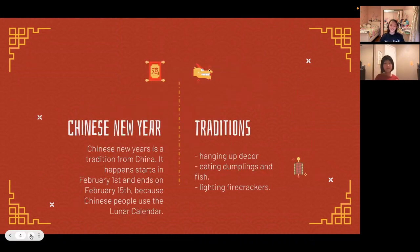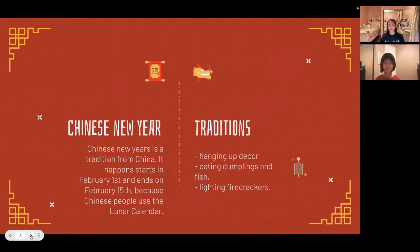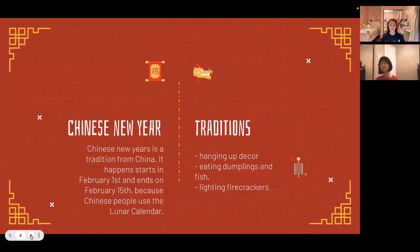Chinese New Year is a very important tradition from China. It starts on February 1st and ends on February 15th, because Chinese people use the lunar calendar. Some traditions during this holiday include hanging up decor, eating dumplings and fish, and lighting firecrackers.